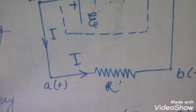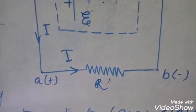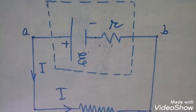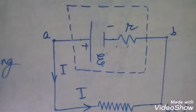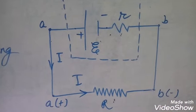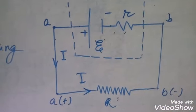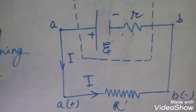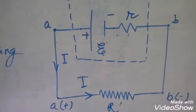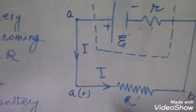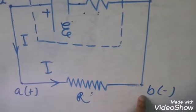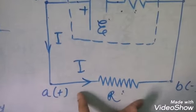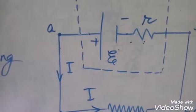An external resistance R is connected across the terminals A and B of the cell. The battery maintains a constant potential difference across its terminals when connected across a resistance. Point A, being connected to the positive terminal of the cell, is at a higher potential, and point B is at a lower potential. The potential difference across the resistance R causes current I to flow in the circuit.